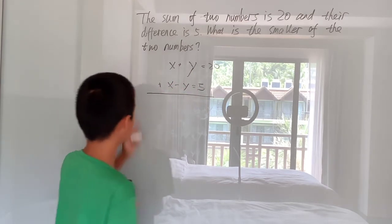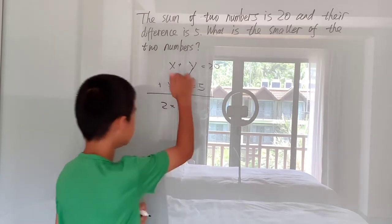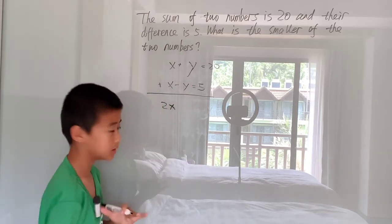you can see that we have add y and minus y, which means if we add these two equations together, these two x's, well, that's just 2x, and then this positive y and negative y, they both simply cancel.